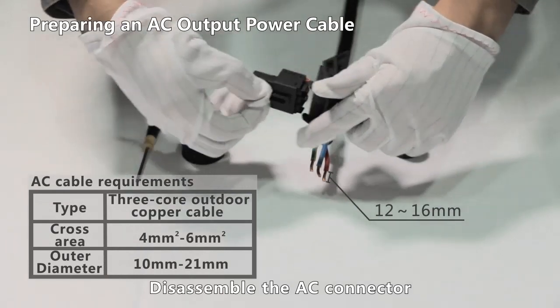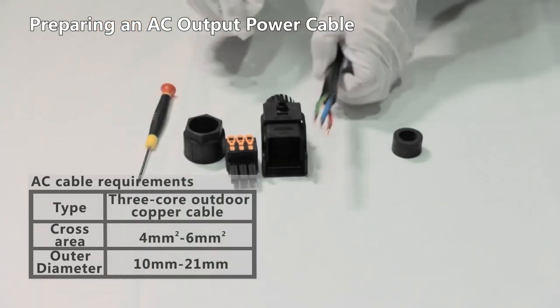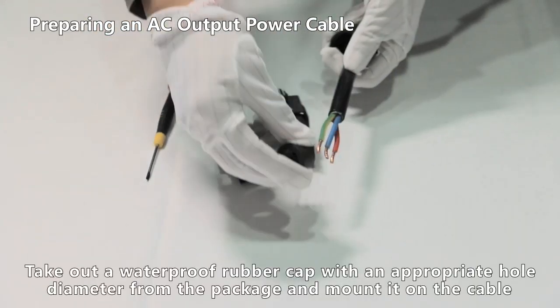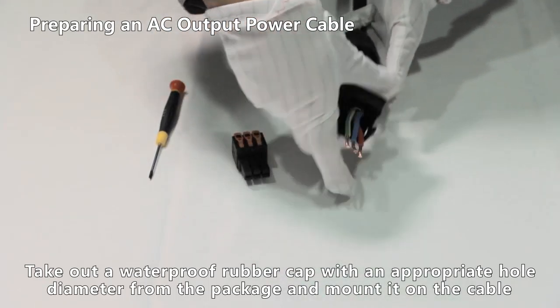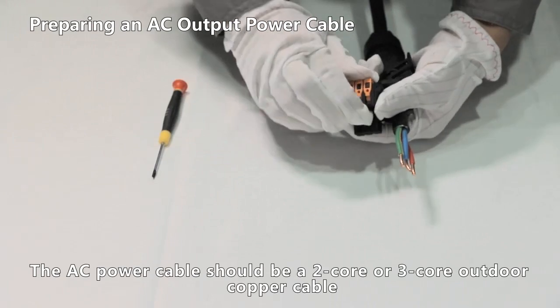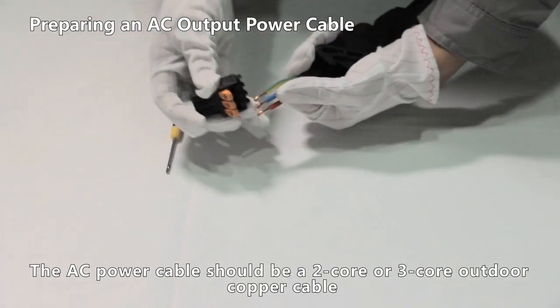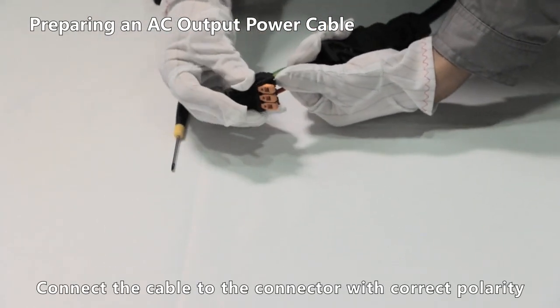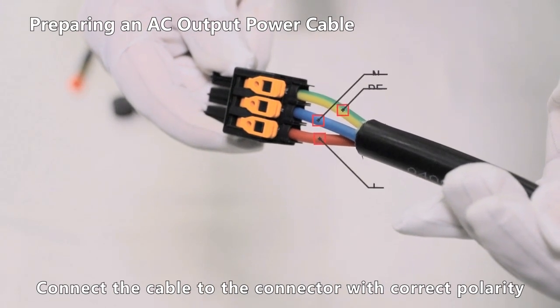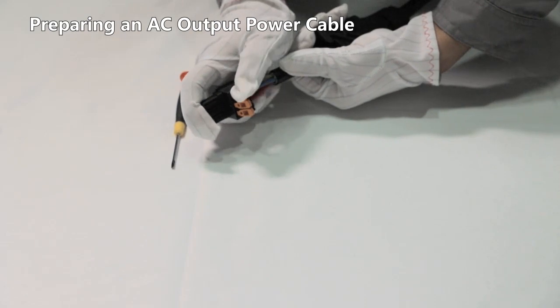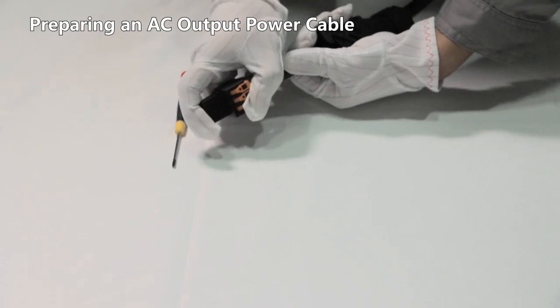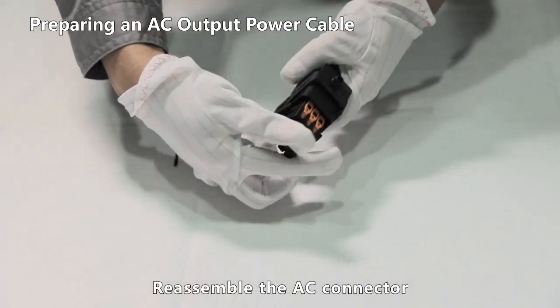Disassemble the AC connector. Take out a waterproof rubber cap with an appropriate hole diameter from the package and mount it on the cable. The AC power cable should be a 2-core or 3-core outdoor copper cable. Connect the cable to the connector with correct polarity. Reassemble the AC connector.